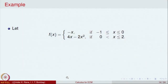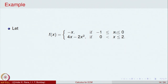Let us look at the example where the function is f(x) = -x for x between -1 and 0, and f(x) = 4x - 2x² for x strictly greater than 0 and less than or equal to 2. The function is defined differently on these two pieces, and its domain is the closed bounded interval from -1 to 2.